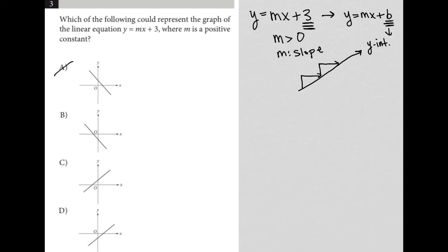So we know that a and b are gone because the lines are going in the wrong direction. But we know that d is not correct because the y-intercept here is at a negative value, whereas the y-intercept for choice c is at a positive value. And therefore, choice c must be the correct answer because we have a line that has a positive slope and has a y-intercept that's positive.